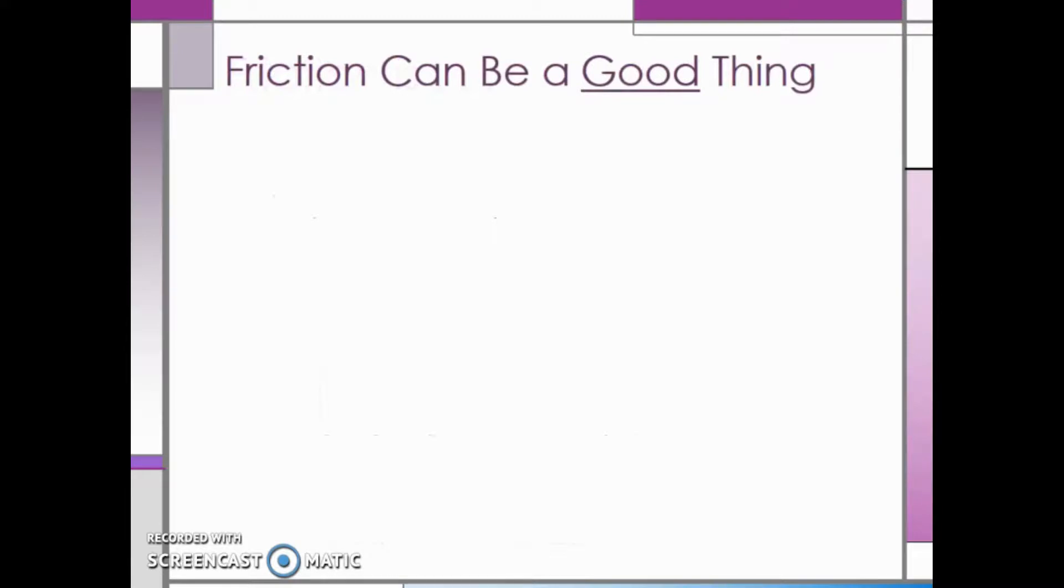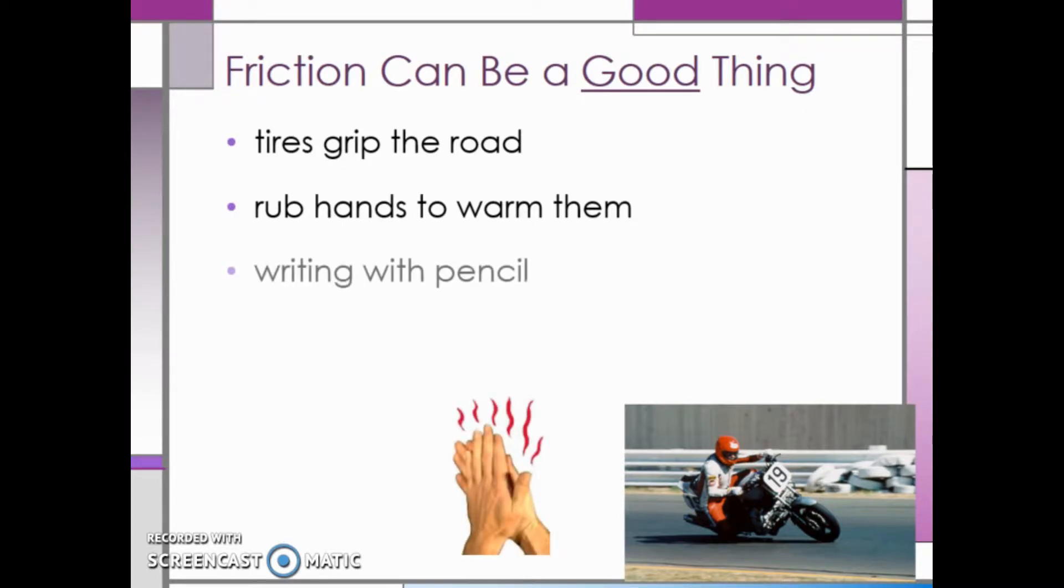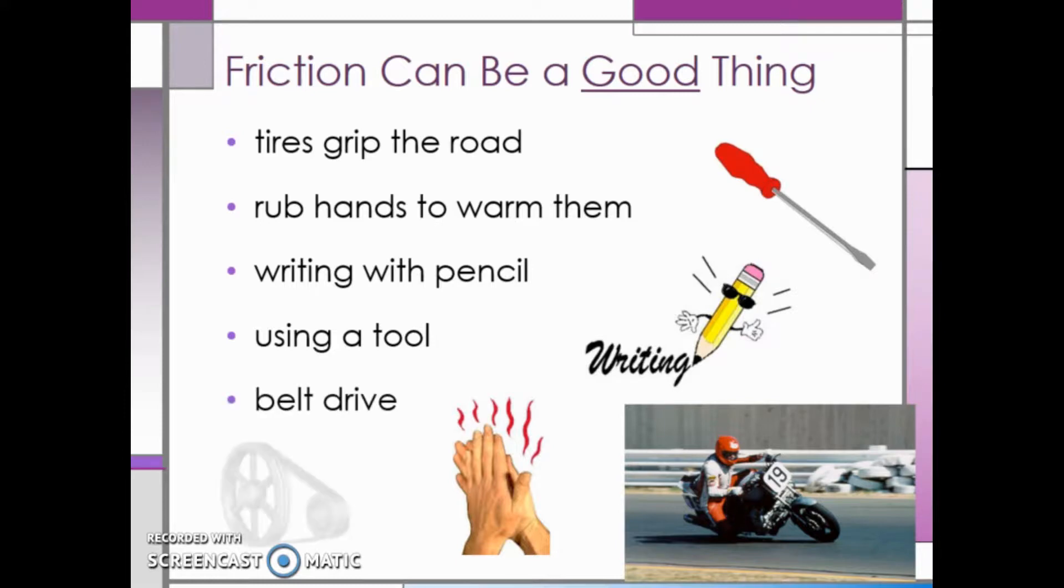Friction can be a good thing in some cases. For example, without friction, your tires don't grip the road. In winter, when there is snow or ice on the road, there is less friction, making it easier to lose control or not be able to stop your vehicle. If you rub your hands together, the friction causes them to heat up. Writing with a lead pencil wouldn't be possible without friction because the friction between the lead and paper is what causes your writing to show up. Using a screwdriver would be difficult without friction since it allows you to grip and turn the screwdriver. In a belt drive, without friction, the belt might fly off the pulleys.